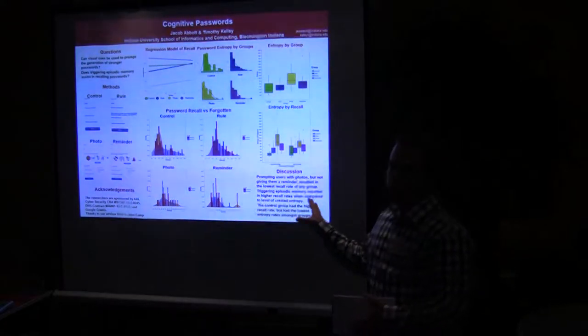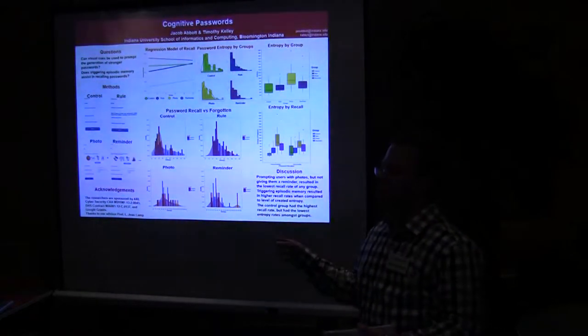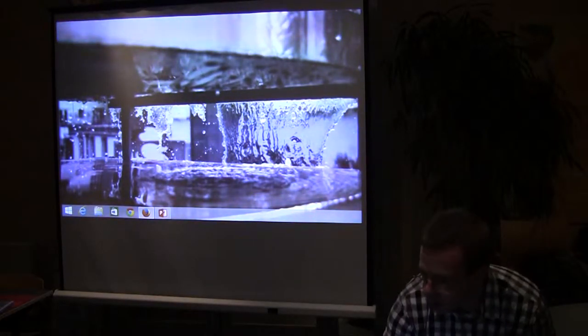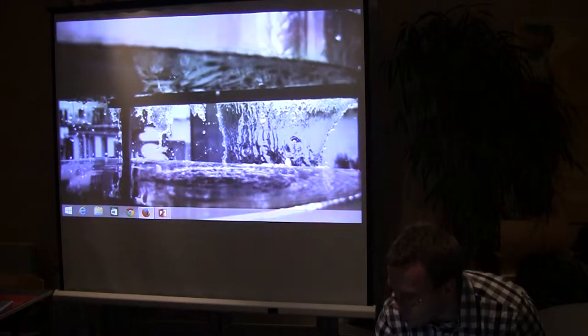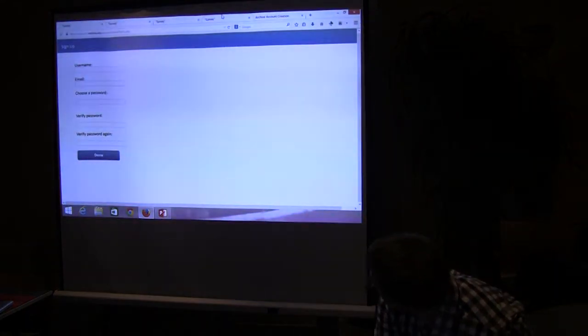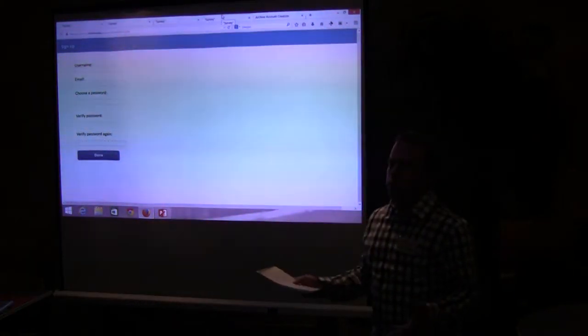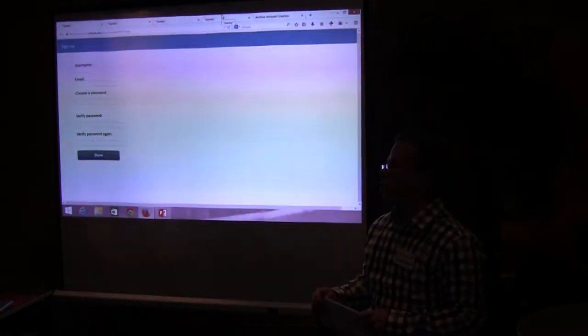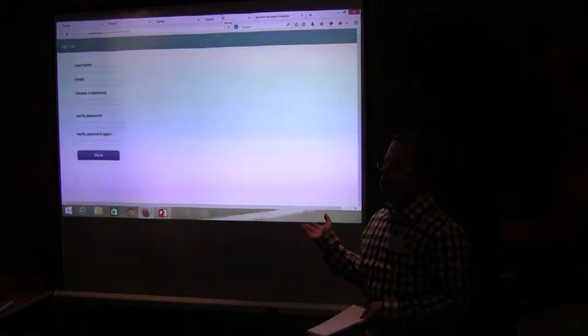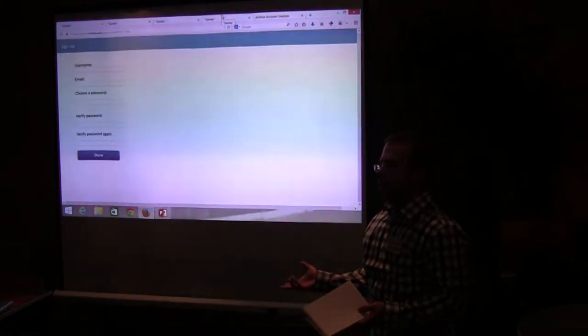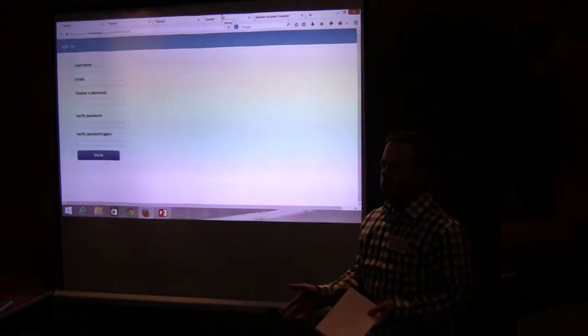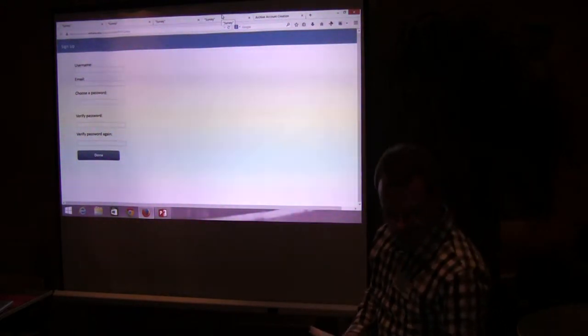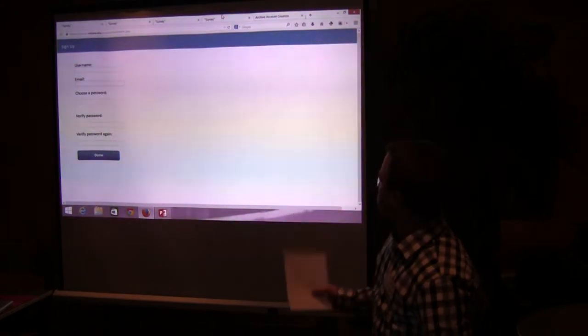And I can't really see very well on this, so I'm going to actually show the different websites that we had for each of the groups. So this is a basic control group where it looks like an account creation page, and the only requirement that we actually had for this group was that the character count of the password be at least eight characters. They could use any symbols, letters, or no symbols, just lowercase letters or anything like that. And this we termed the control group.